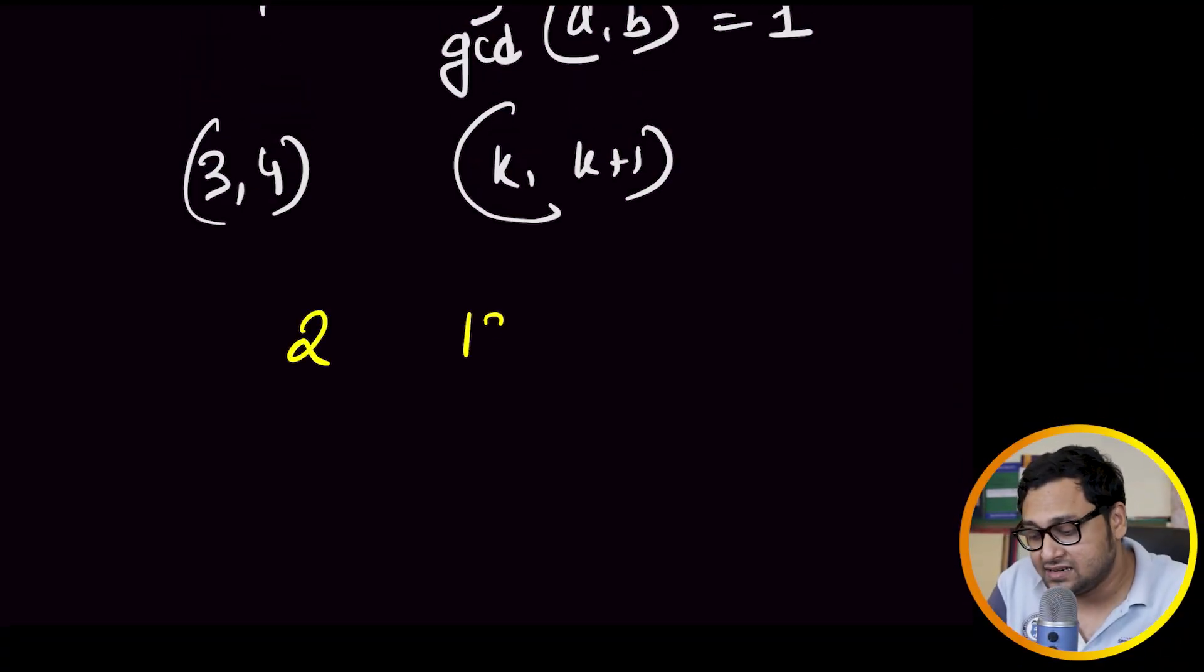Now suppose I ask you to produce examples of two co-prime numbers which are not consecutive. So you might say, oh, OK, so just take two prime numbers. Let's say 2 and 13. That would work. Yes, absolutely. That's the next example, next class of examples rather.